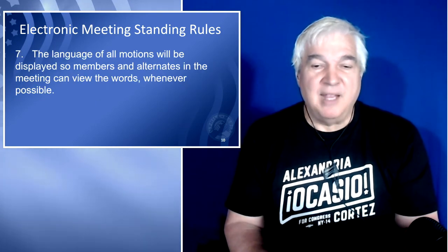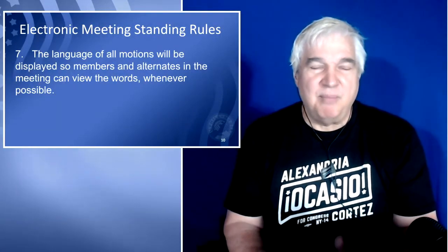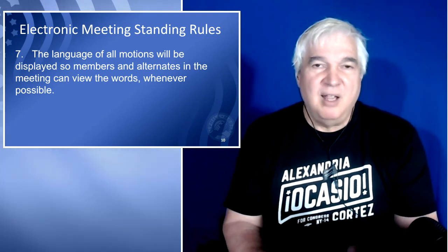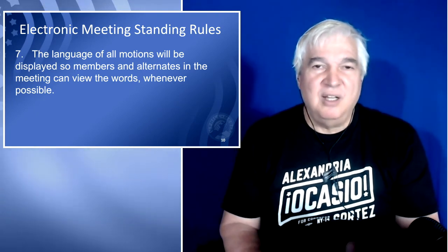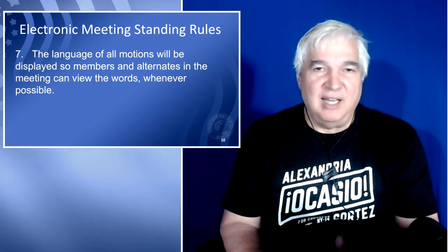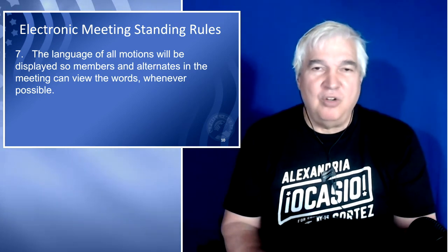Rule number seven: the language of all motions will be displayed so members and alternates in the meeting can view the words whenever possible. This would actually be a great rule for all meetings because some of our motions get very long, and really it's the wording of the motion that is most important. It's especially important in meetings where there might be people watching on a phone who can't hear everything clearly, and certainly for longer motions, everyone can't keep all the language in their head. If the language could be displayed, it would be a huge benefit to everyone in the meeting.